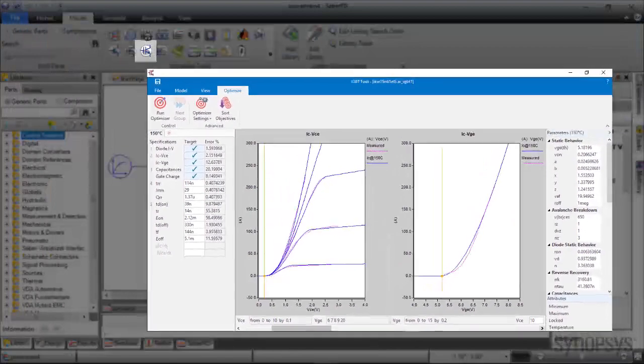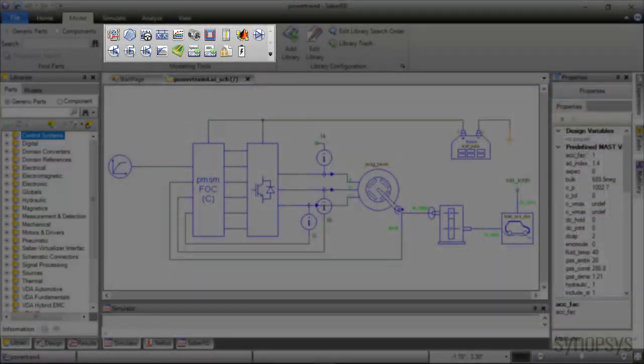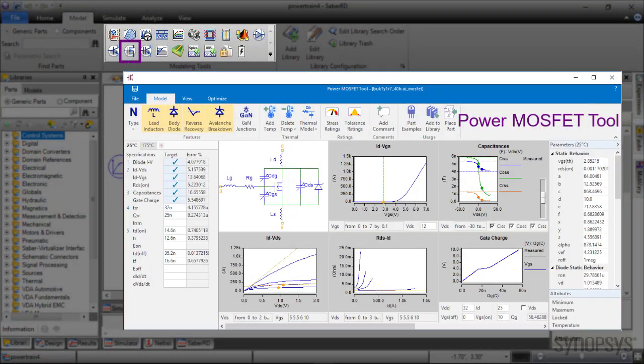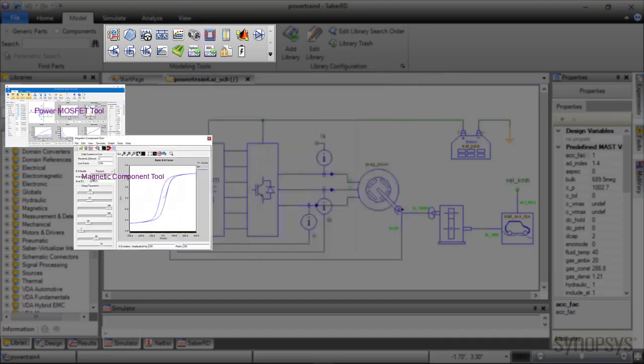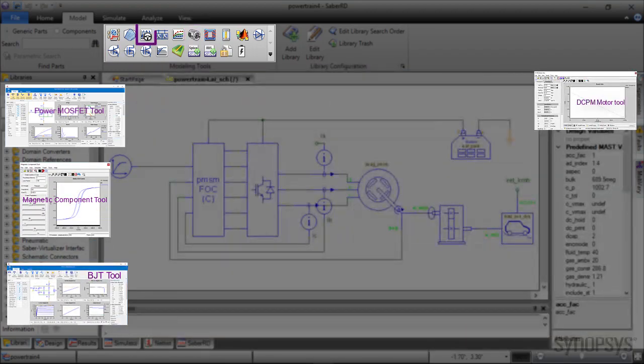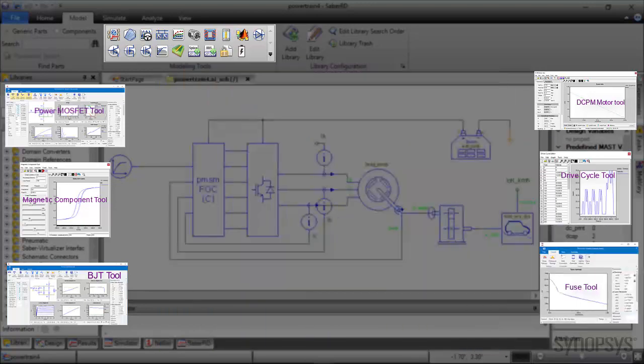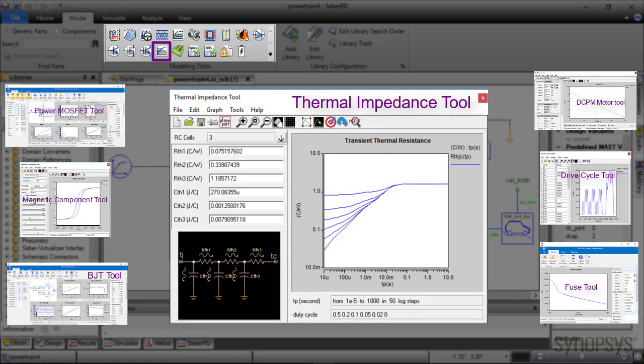Just like IGBT, there are handful of other modeling tools for power MOSFETs, magnetic components, BJTs, DCPA motors, dry cycles, fuses, and thermal impedance that are very useful in electric vehicle design and simulation.